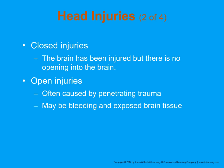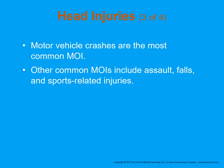Head injuries can be divided into two categories. A closed head injury means the brain is injured inside the skull or cranium. An open injury often results from penetrating trauma, may have bleeding, may have exposed brain tissue, and the brain is open to the atmosphere. Motor vehicle crashes are the most common form of mechanism of injury for head injuries. Other forms include assaults, falls, and sports-related injuries.